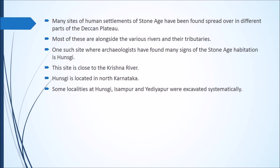Most of these sites are near rivers and their tributaries — tributaries means smaller rivers or streams that join the main river. One such site where archaeologists have found many signs of Stone Age habitation is Hanske, close to the Krishna river, located in North Karnataka. Some localities at Hanske, Isampur, and Adiapur were excavated systematically — excavated means to carefully remove earth in order to find buried remains.